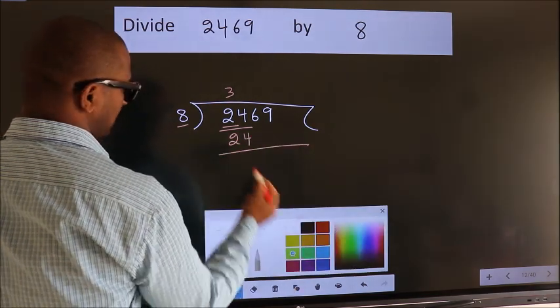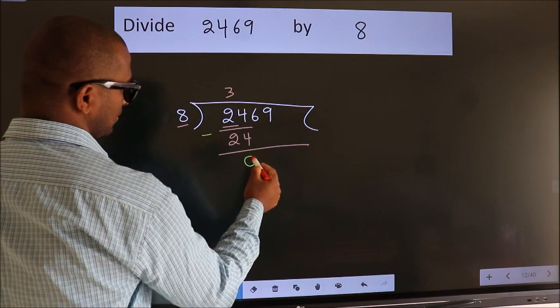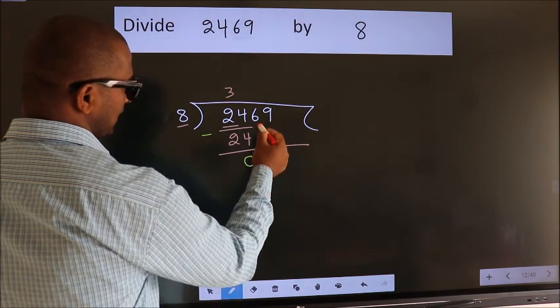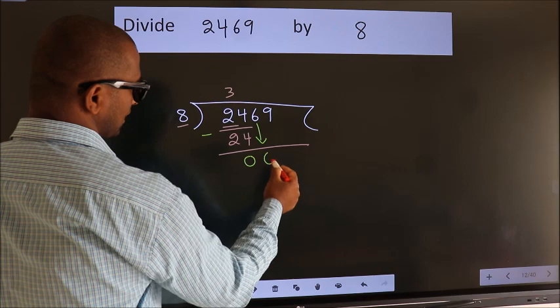Now, we should subtract. We get 0. After this, bring down the beside number. So, 6 down.